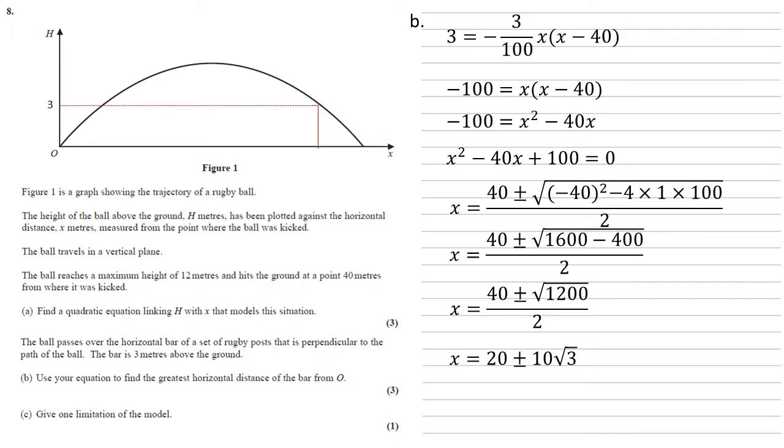Now as we want the one that is furthest away, our answer is going to be 20 plus 10 root 3, which to one decimal place gives us 37.3 metres.